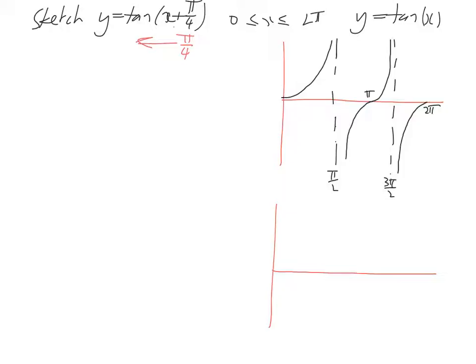Firstly we'll look at our asymptotes. So we know that whatever we've got there has to equal pi on 2. So x plus pi on 4 has to equal pi on 2, which implies that x equals pi on 4.